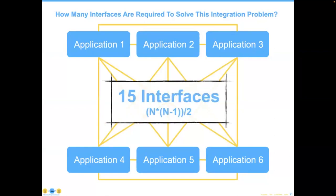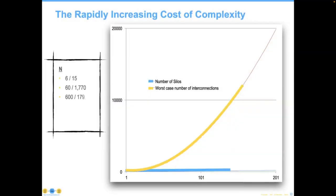The number of interfaces for six applications is six times five divided by two, giving us 15. The Royal Canadian Bank told me they had 200 major applications and about 5,000 interfaces between all of them. Looking at the comparison — six going to 60 going to 600 — they're clearly better than average, and they still have a very large and complex situation on their hands. The fewer of these things an organization has, that's got to be a stated objective goal in order to work towards this.